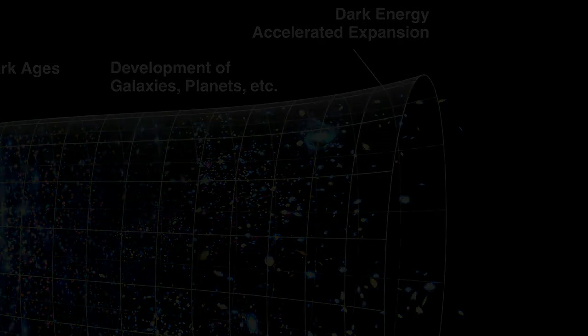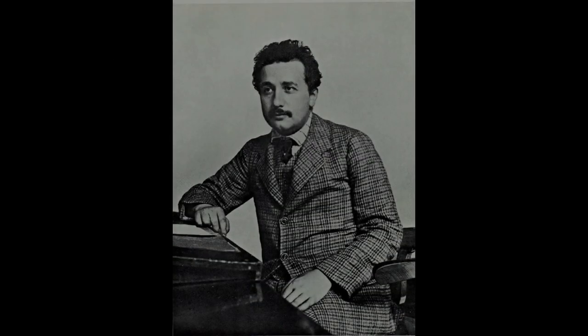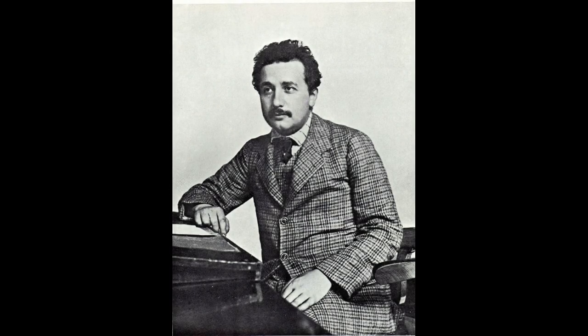In 1917, in an effort to explain how the universe could be static and eternal — the prevailing belief at the time — without gravitationally collapsing, Einstein introduced lambda as a parameter to his equations of general relativity.